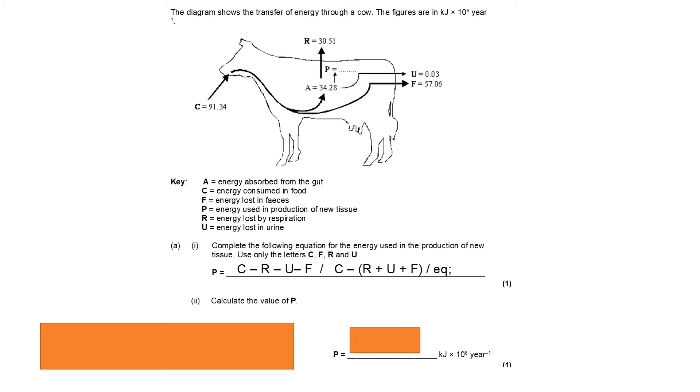Then it asks us to calculate the value of P. So all we have to do here is insert the numbers that were given in the diagram into this equation that we have just written out. So as long as we've got this part of the question, then this second part should be relatively easy. Because what we're saying here is C, 91.34 minus 30.51 minus 0.03 minus 57.06. Or you can sum these together and then take them away. So 91.34, which is energy consumed, minus the sum of losses due to respiration, urine and feces production. And that should give us a value of 3.74.